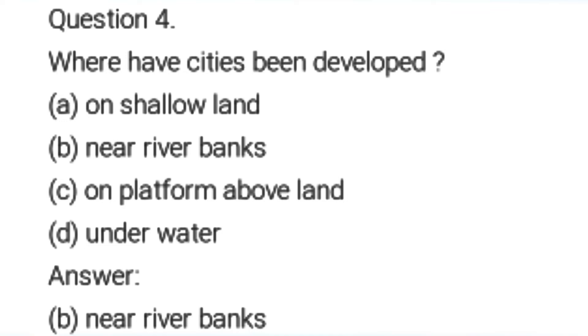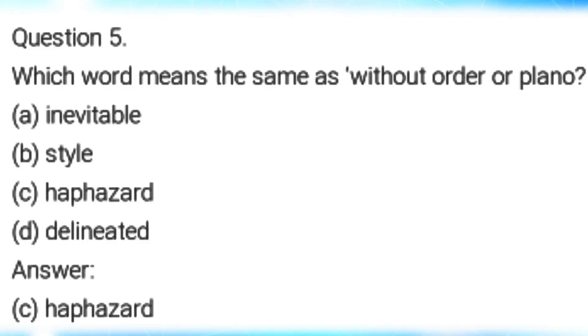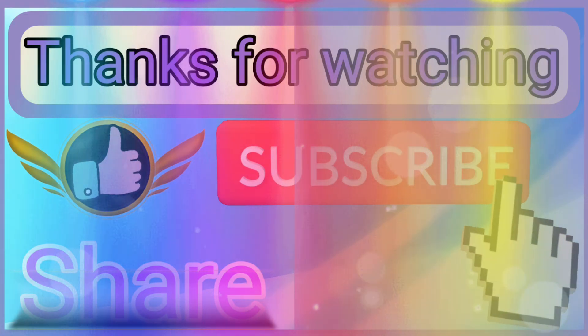Fourth question: Where have cities been developed? On shallow land, near riverbank, on platform above land, underwater. The answer is near riverbanks. Fifth question: Which word means the same as without order or plan? Inevitable, style, haphazard, delineated. The answer is haphazard.